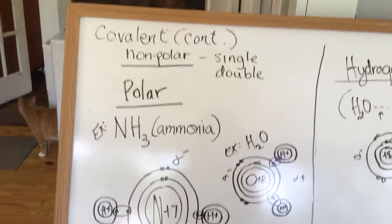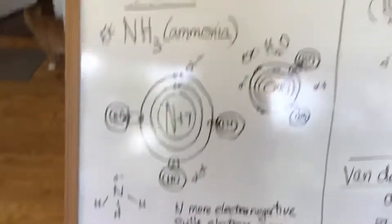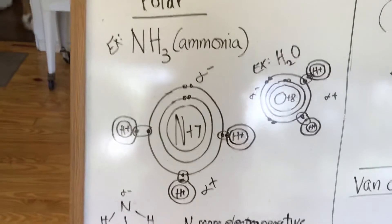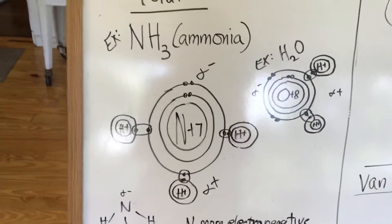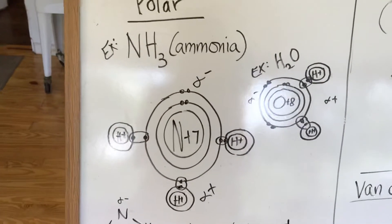It's still a sharing of electrons. So let's look at ammonia. NH3 is the formula for that. That is one nitrogen and three hydrogens together.